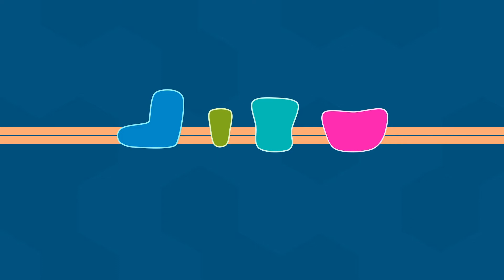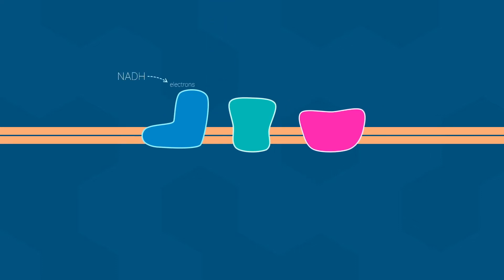The electron transport chain accepts electrons from the electron carriers and uses them to reduce oxygen. So let's examine the electron transport chain from the point of view of each electron carrier. The electrons from NADH pass through three of the electron transport chain proteins: complex 1, 3, and 4.